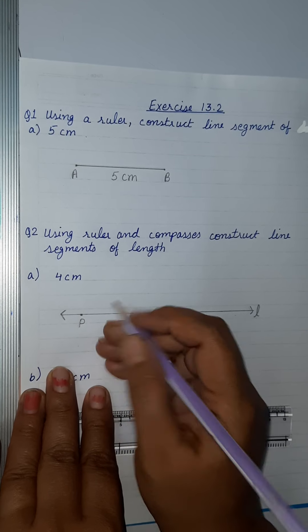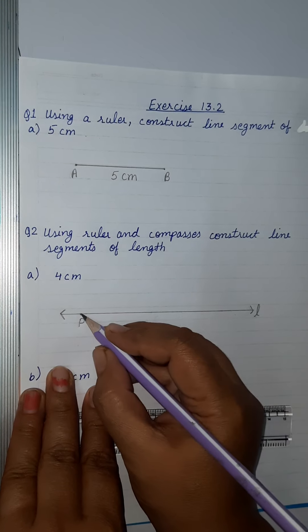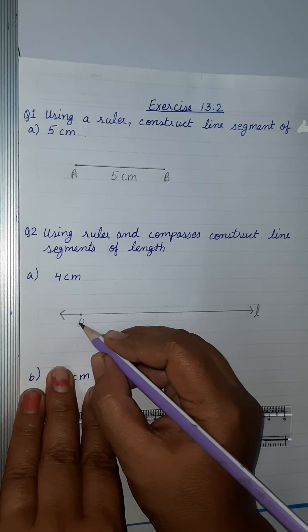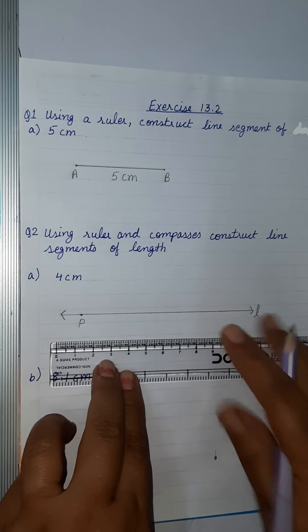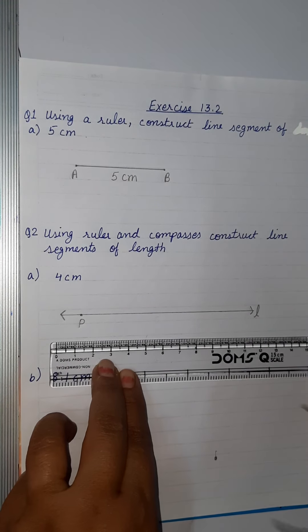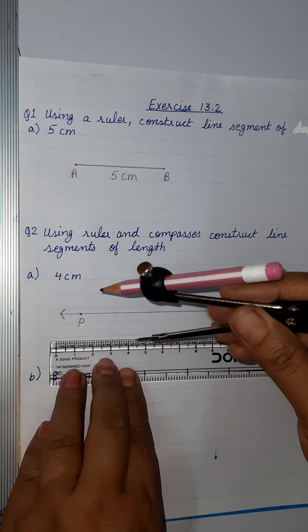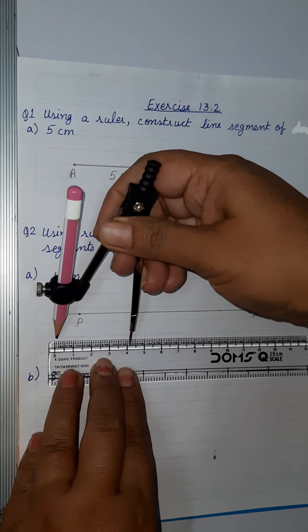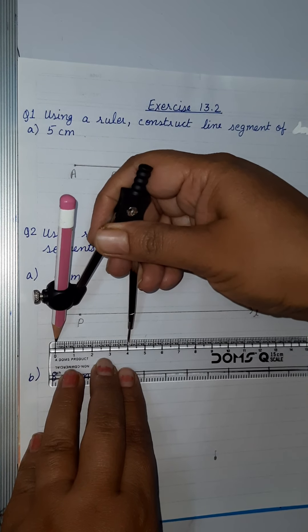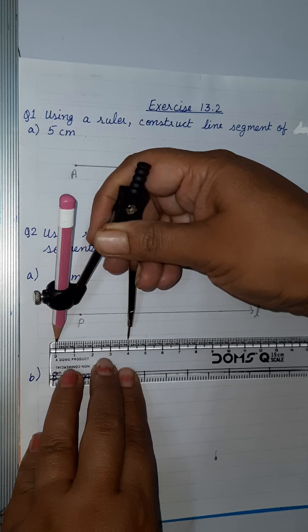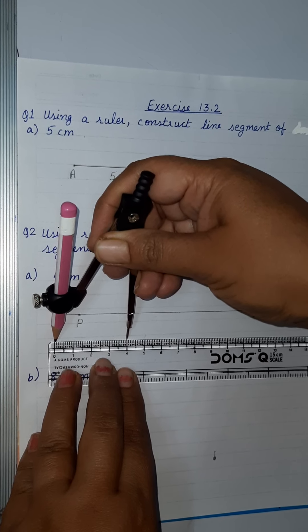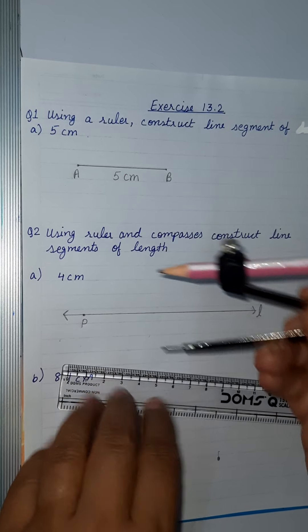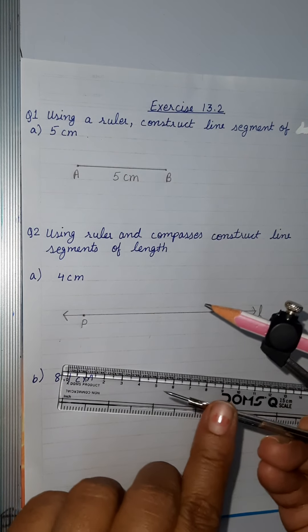Mark a point P at the beginning of line l, without any measurement. Now we will measure 4 centimeters with the help of our compass on the ruler, starting from 0.